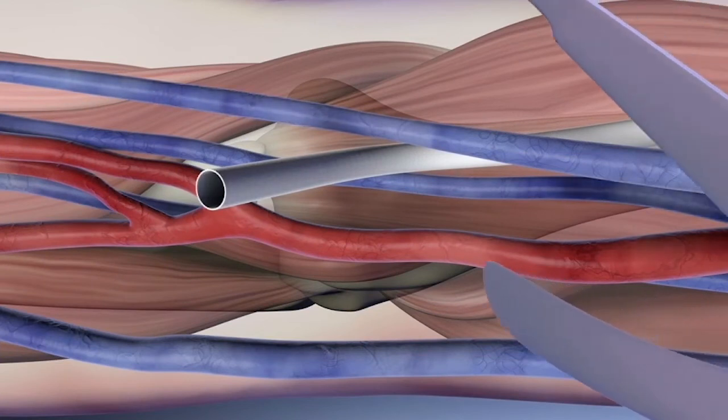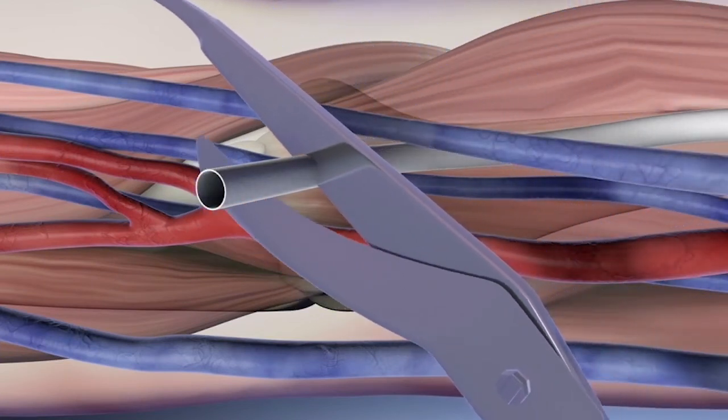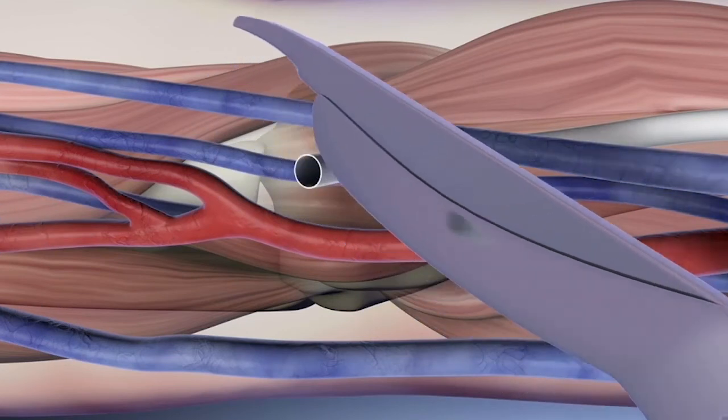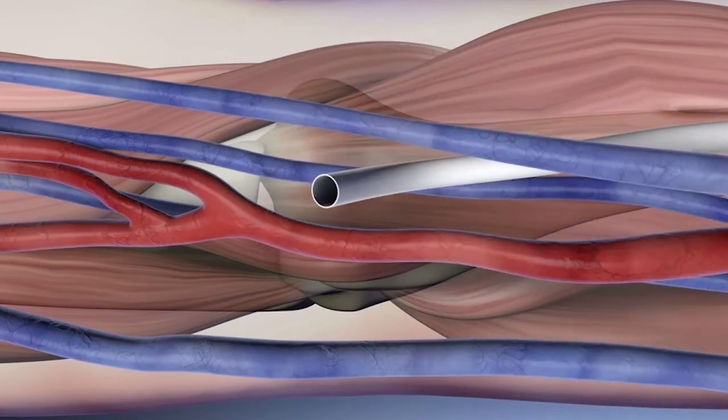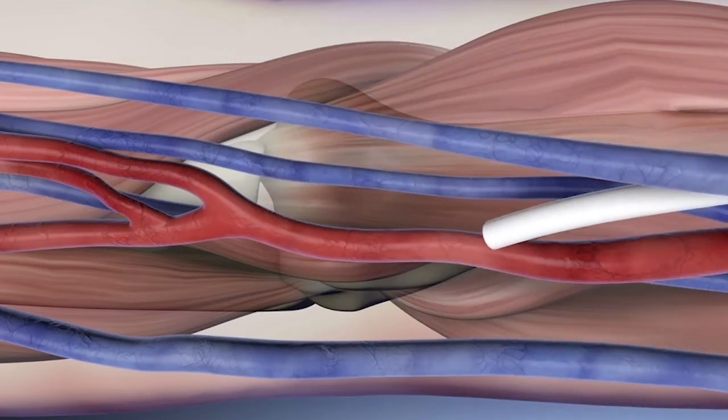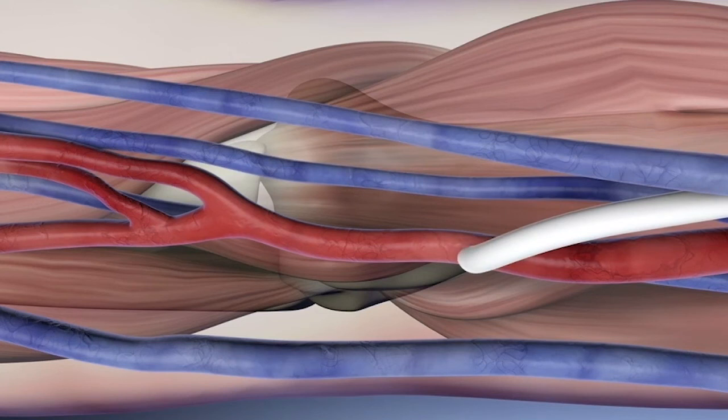To perform the arterial anastomosis, cut the graft to length and ensure the graft is not twisted or kinked. Complete the arterial anastomosis using standard technique.